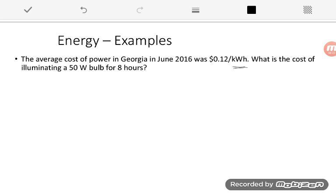So let's look at this problem. The average cost of power in Georgia in June 2016 was $0.12 per kilowatt hour. What's the cost of illuminating a 50-watt bulb for eight hours? So the question really is how much money you're going to have to spend. And what it tells you is that it's going to cost you $0.12 per kilowatt hour. You have a 50-watt bulb, so we know that's a power. And our time here is eight hours.